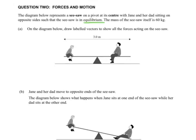The mass of the seesaw itself is 60 kg. On the diagram below, draw labeled vectors to show all the forces acting on the seesaw. We've got the weight force of Jane, so we'll call that F subscript J for Jane. We are assuming, without any other knowledge, that her dad will be heavier than her, have a greater weight force, so we'll draw the arrow longer. We'll call that FD for force due to Dad - force due to gravity acting on Dad, force due to gravity acting on Jane.